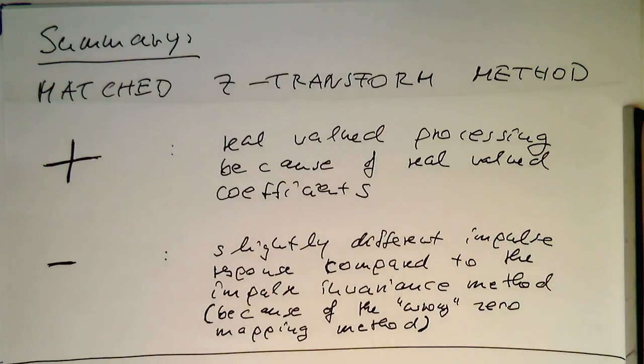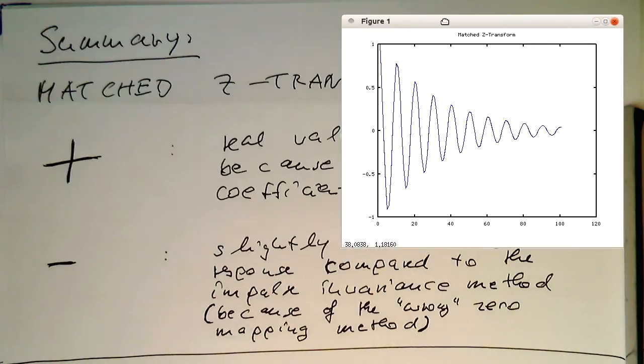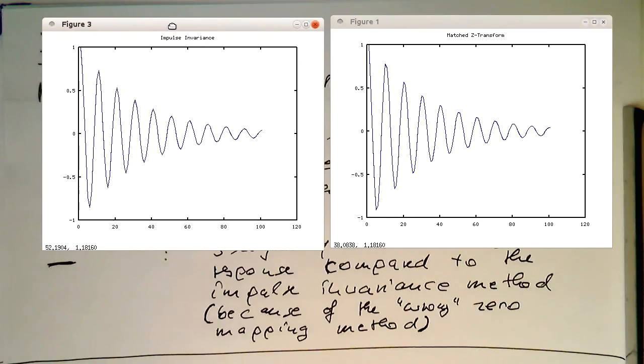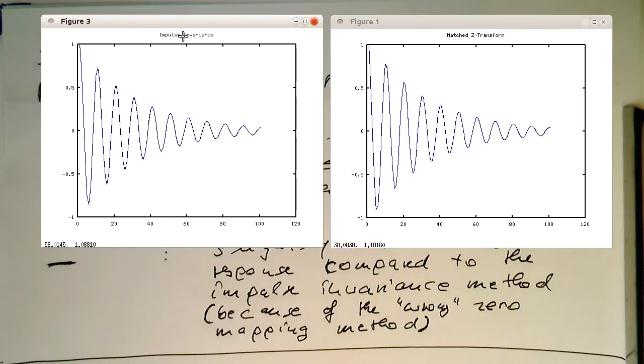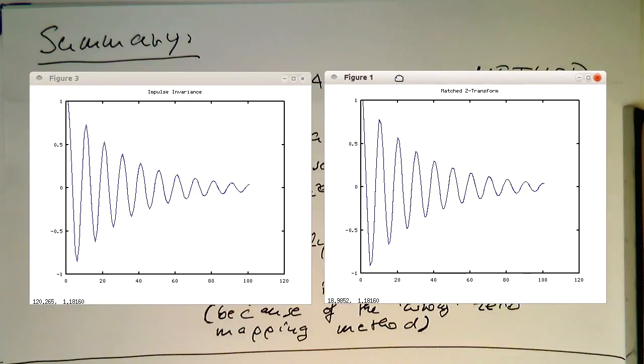It's quite reasonable if we are comparing the impulse responses of the impulse invariance method, which is on the left here, to the matched Z-Transform on the right. We see that there's not much difference between these two impulse responses.